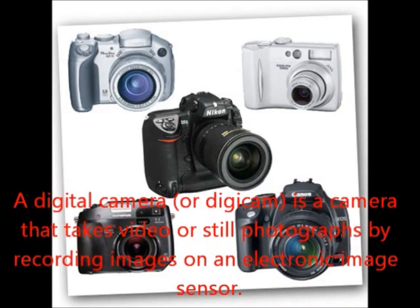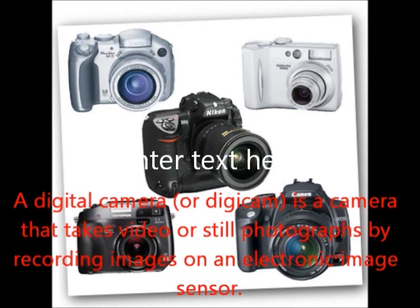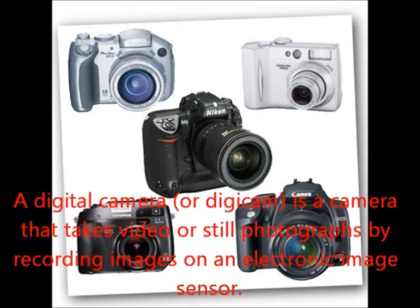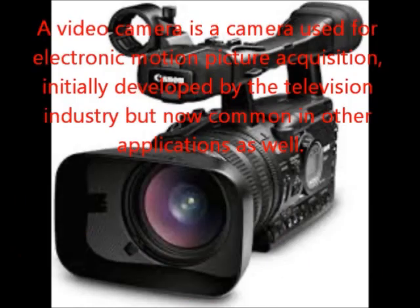Next is image capturing devices — digital cameras. A digital camera, also called a digicam, is a camera that takes video or still photographs by recording images on an electronic image sensor. Next is digital video cameras. A video camera is a camera used for electronic motion picture acquisition, initially developed by the television industry, but now common in other applications as well.